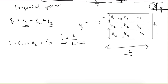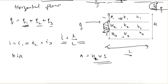Using Darcy's formula, discharge is given as k·i·A, where A is the area of cross-section perpendicular to the flow. Here, one dimension is the thickness of the layer (h1, h2, or h3) and we take the other dimension as one unit, so the area of cross-section is simply the thickness of that layer for unit width.